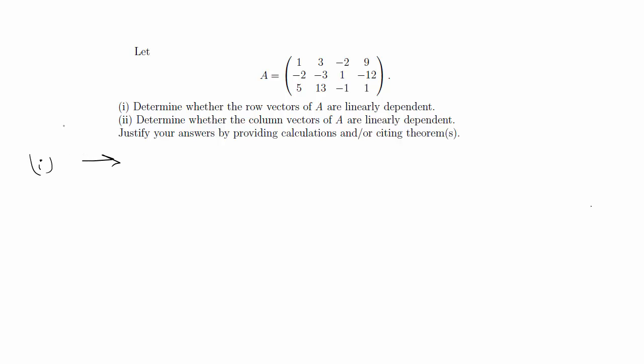The first transformation that I did was r2 plus 2r1 and r3 minus 5r1. So that's going to give you 1, 3, negative 2, 9. So the first row doesn't change. 0, 3, negative 3, 6. And 0, negative 2, 9, negative 44. So that just gives you zeros for the rest of this column.